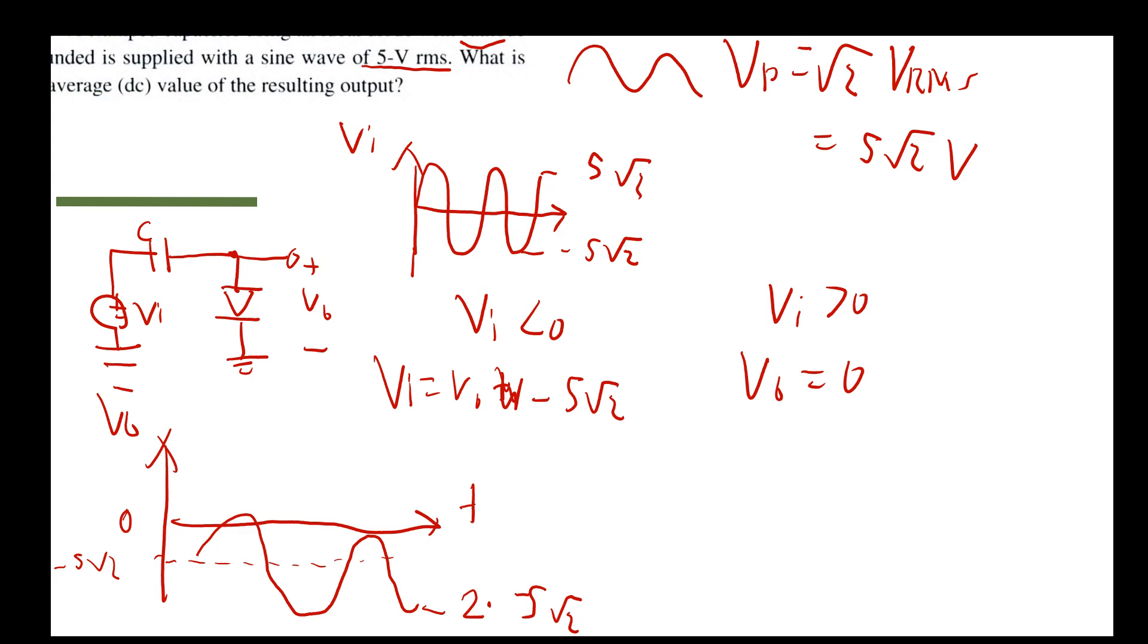So our voltage from peak to peak is equal to 2 times negative 5 square root of 2, which means that the average DC value of the resulting output average would be simply negative 5 square root of 2.